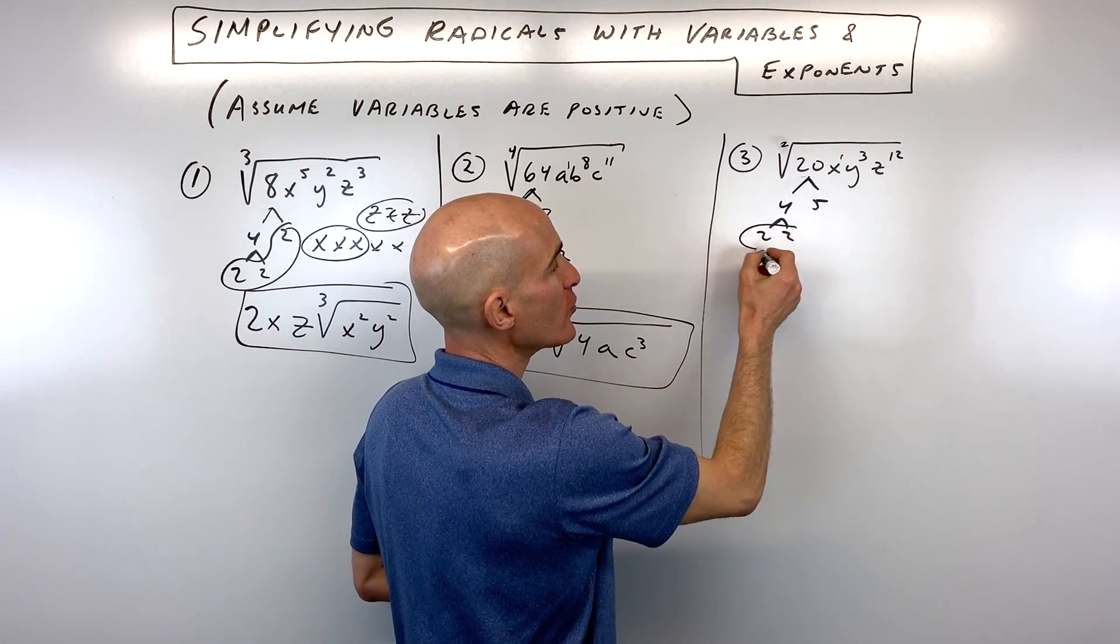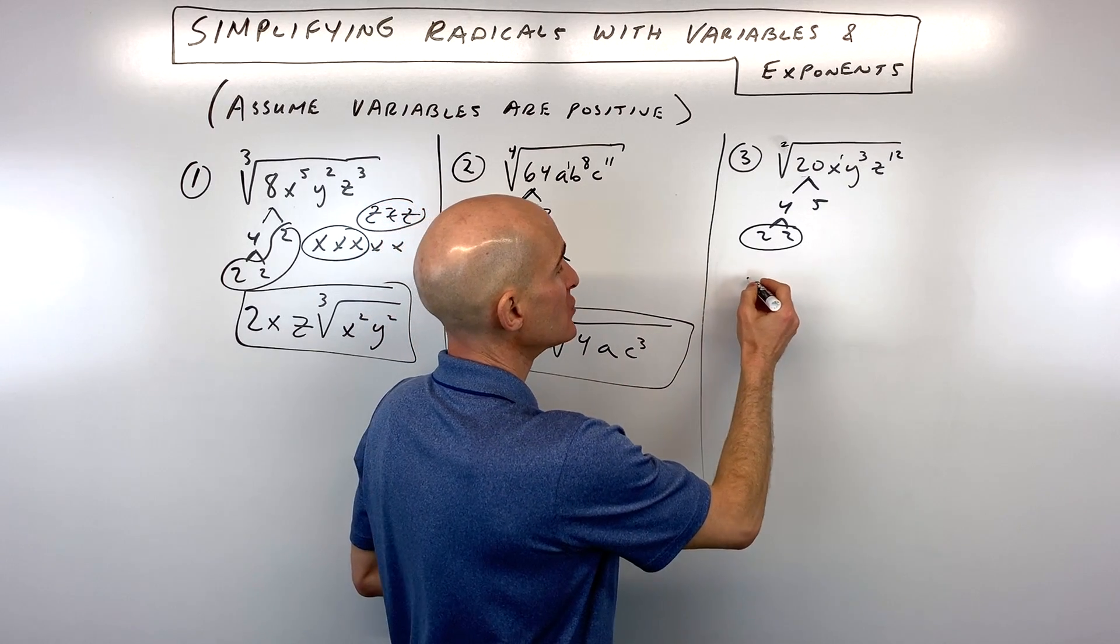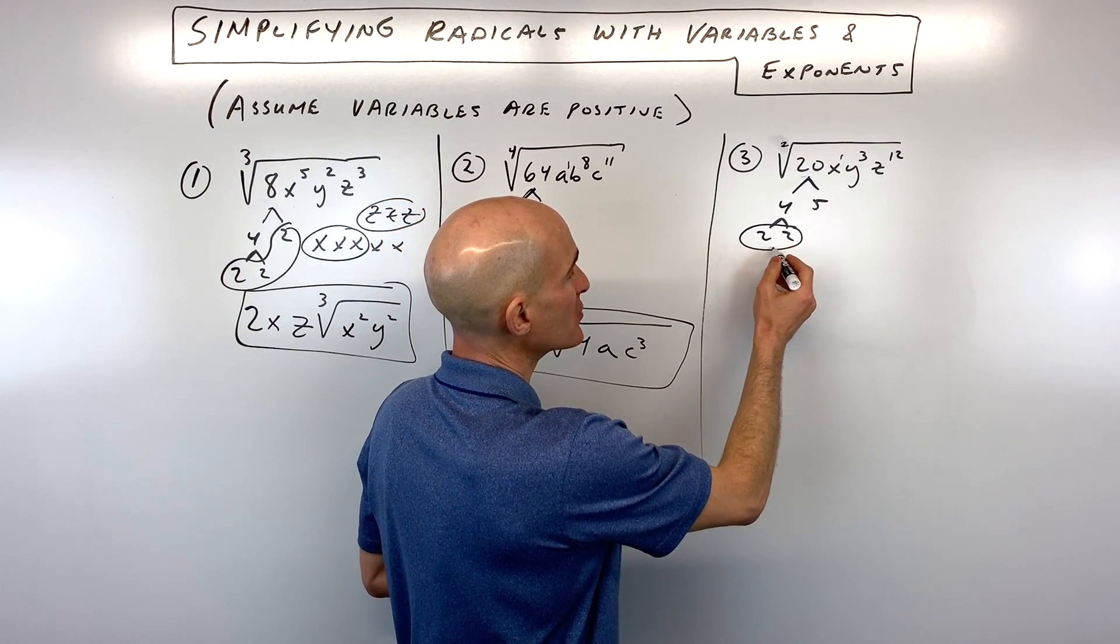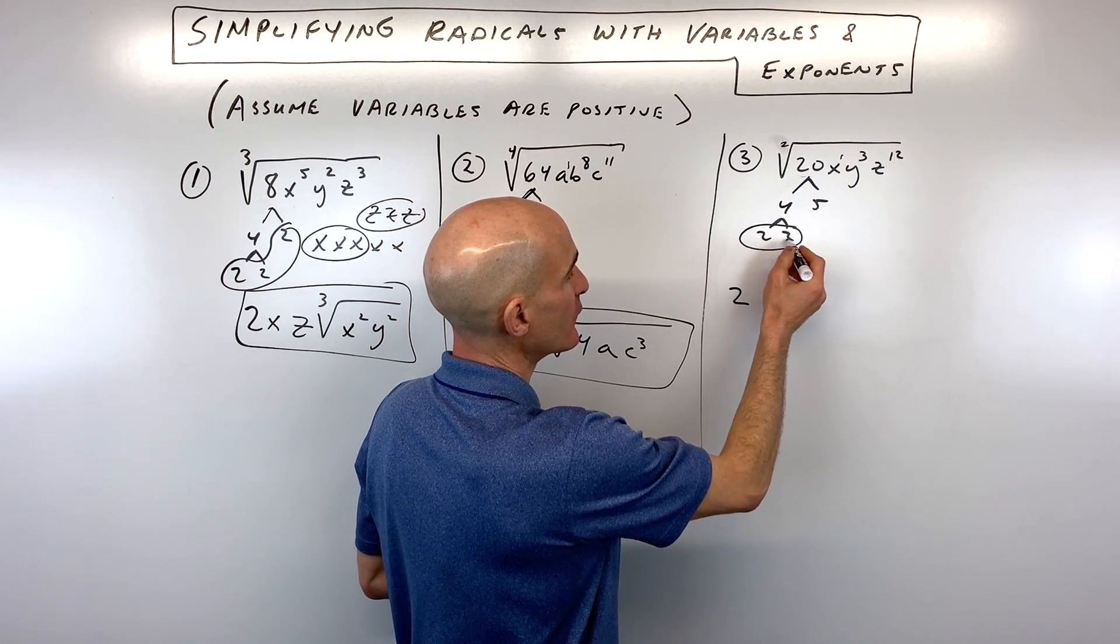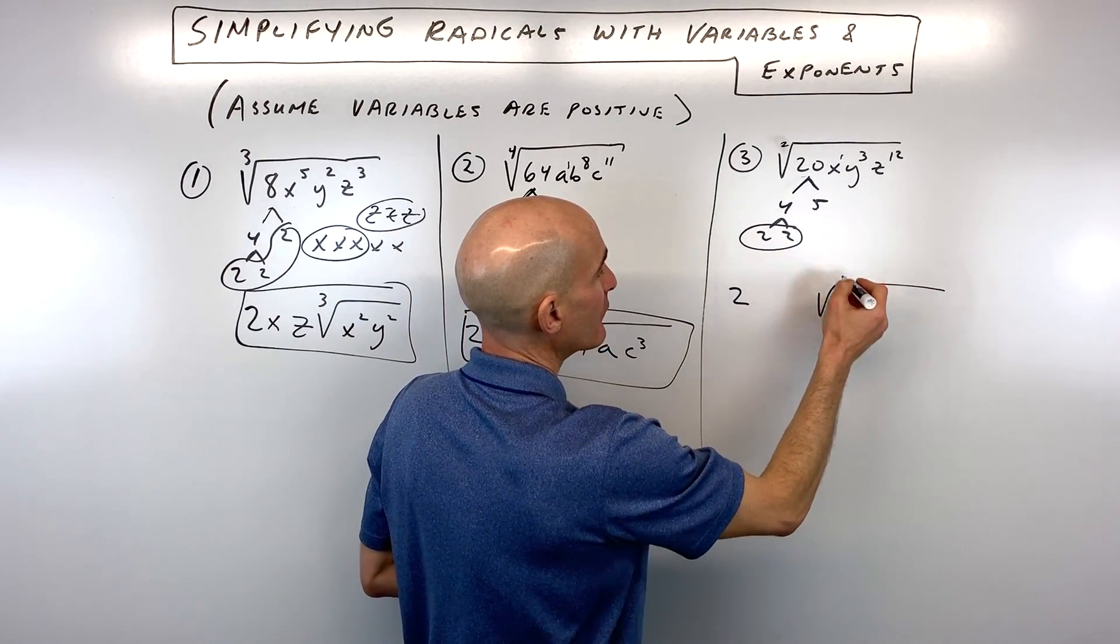Since we're taking the square root, we're looking for groups of 2 of the same number to find a perfect square. So that's going to represent 2, because this is like 4. Square root of 4 is 2. And then we have a 5 left over.